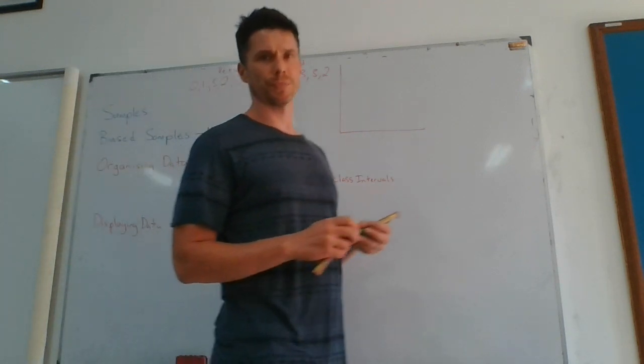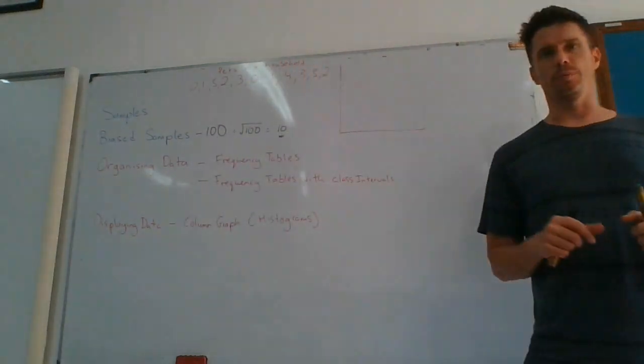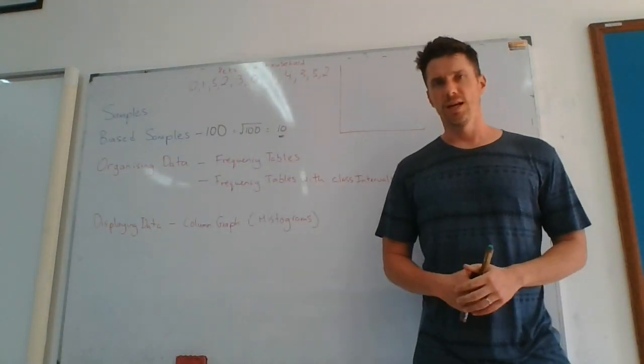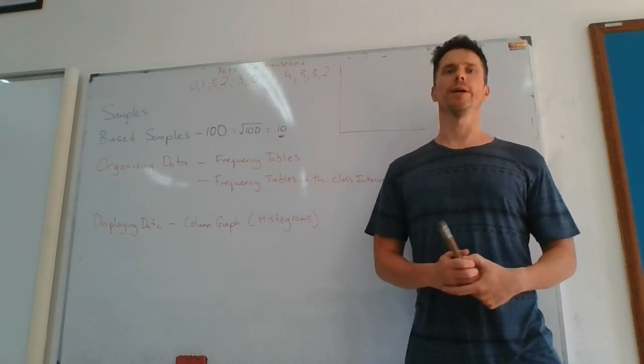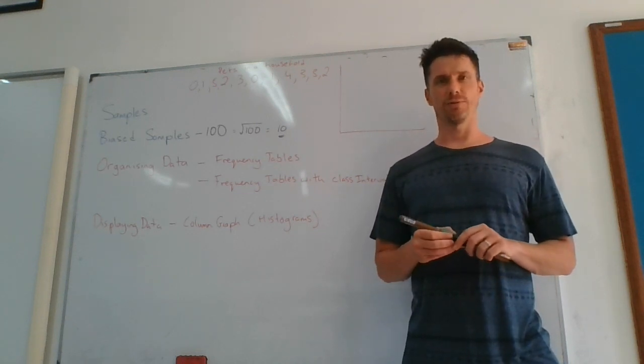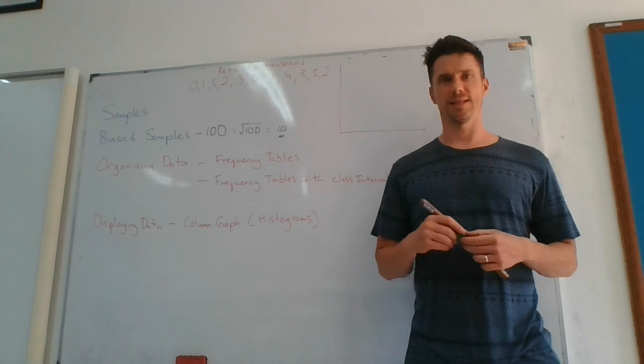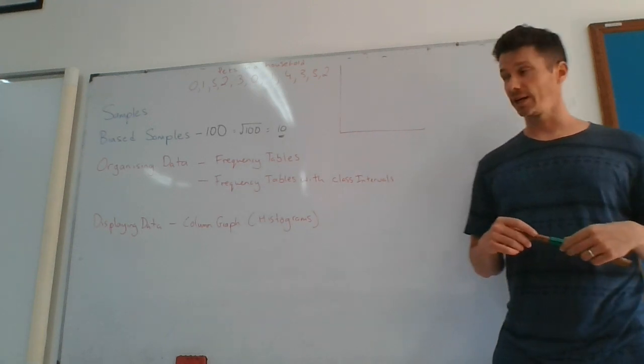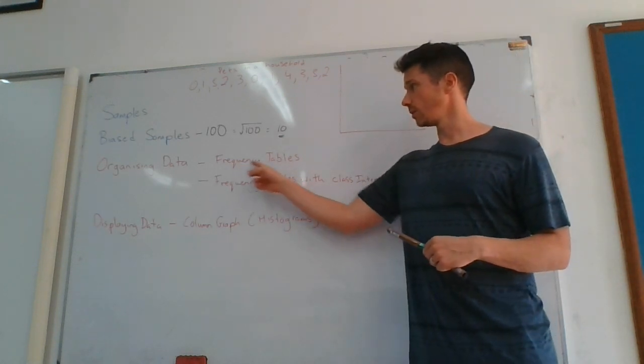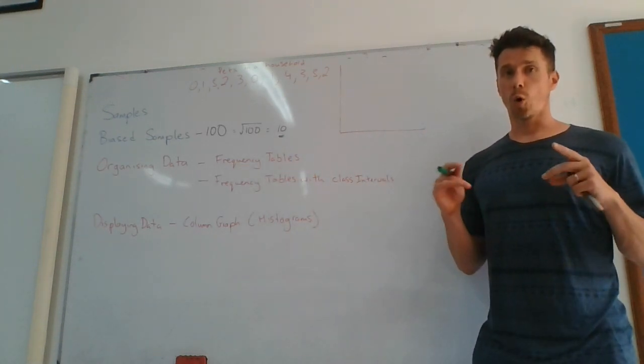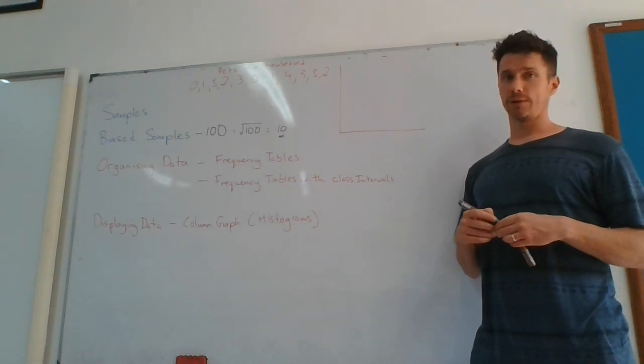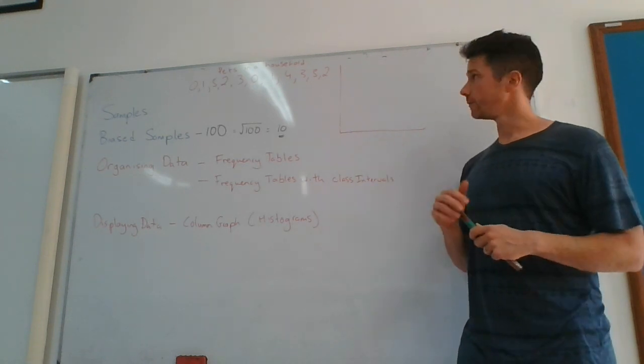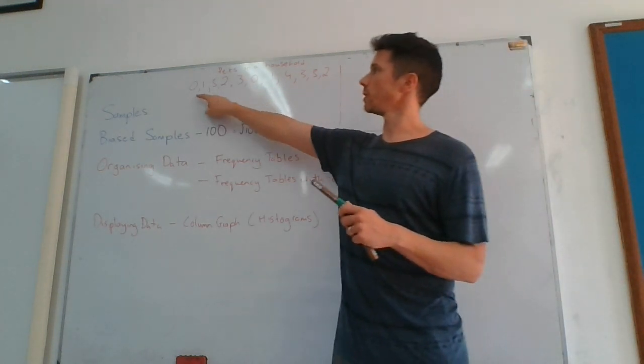Okay, so that's a little bit, generally there's not too much of that discussion in year seven. We deal with more in year eight, but just giving you a taste of what biased sampling is. So now, but we do need to look at organizing data into something called frequency tables. Now I hope you've done this in previous years, but if not we will look at it very briefly here.